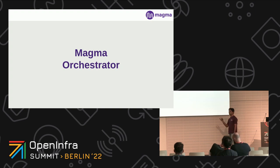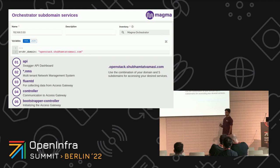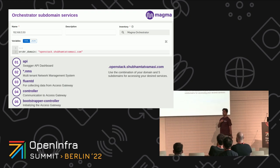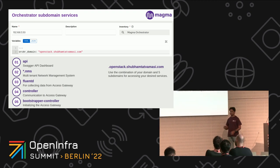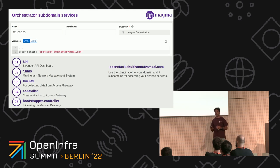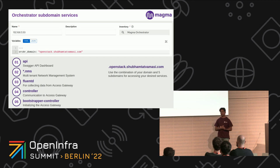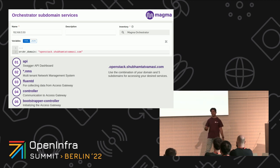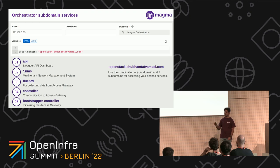Let's start with the Orchestrator — this is the main component of Magma. Before we start, we have to understand what services we are exposing. As a deployer, I just give a domain name, and using that domain name we get five different subdomain services exposed to the cloud. Initially, around four to five years back, all these services were deployed on Kubernetes on AWS. But most telecom operators are now on OpenStack with their own cloud and infra. There was high demand for a private cloud solution, so we started working on an OpenStack solution. Right now we have a working solution that runs 100% on OpenStack, and today I'll be showing a demo.